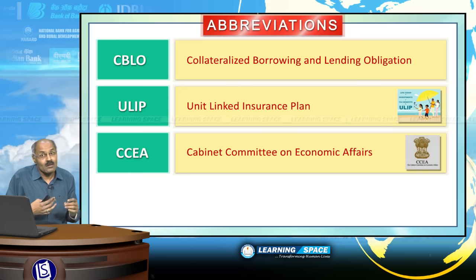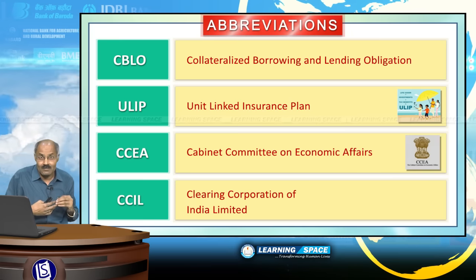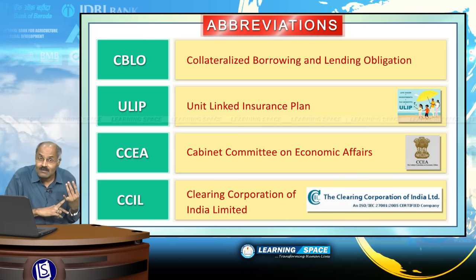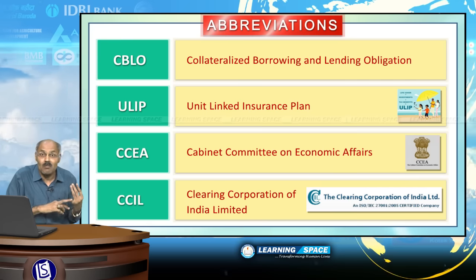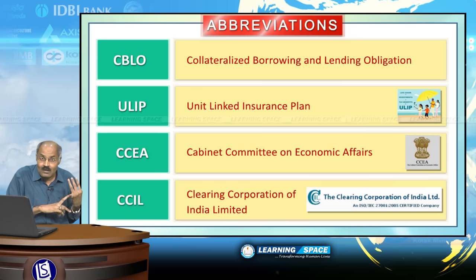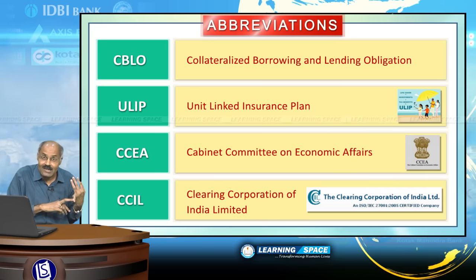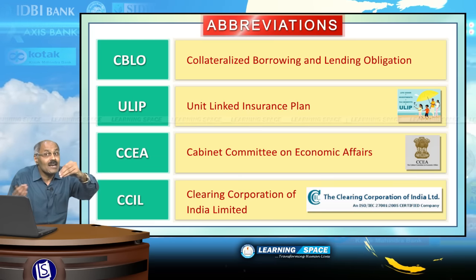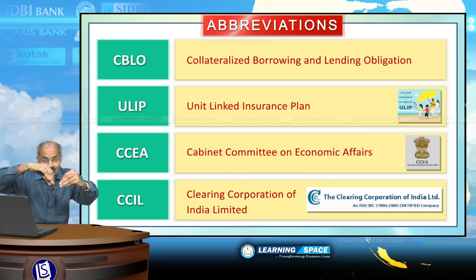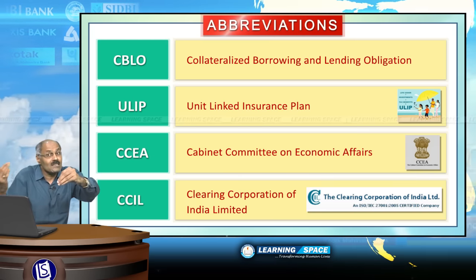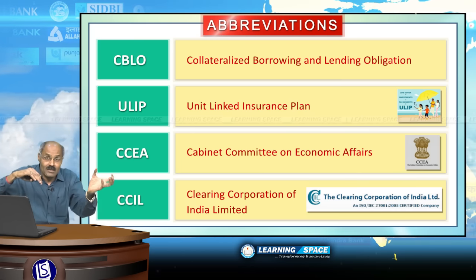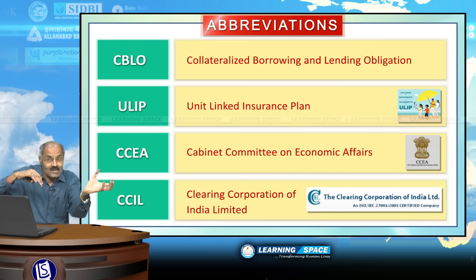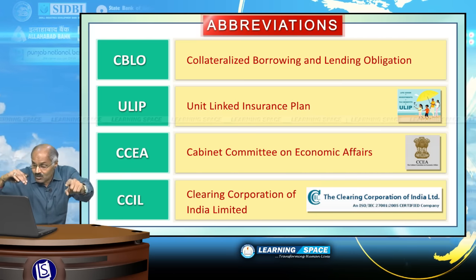CCIL is the Clearing Corporation of India Limited. A lot of trading takes place in government securities, money market instruments, and foreign exchange transactions. CCIL is the clearing agency for government securities, foreign exchange, and money market instruments. CCIL was established in the year 2001.